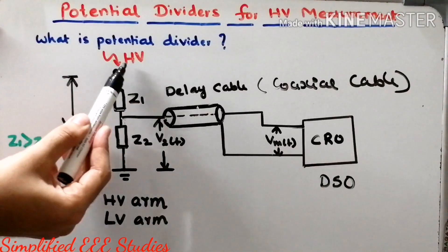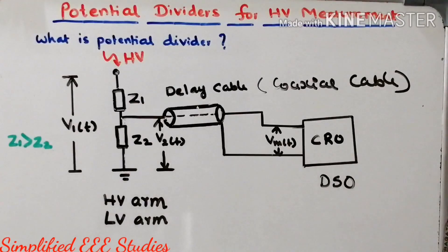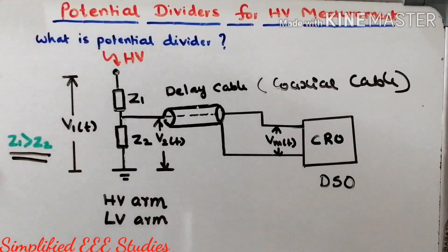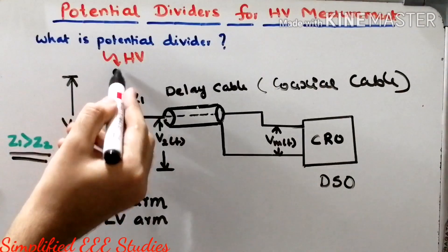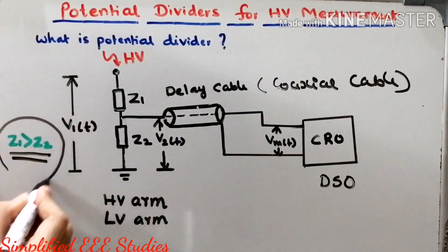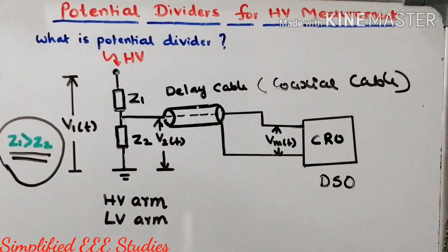Our main intention is to measure the voltage which has been applied externally — that is the ultimate goal. Through the potential divider, this can be easily measured. One important design consideration is that the impedance Z1 will always be greater than Z2, because Z1 corresponds to the high voltage arm and Z2 corresponds to the low voltage arm. While designing, you must ensure that Z1 is always greater than Z2.